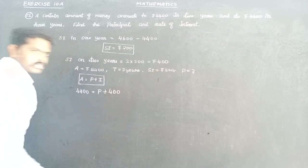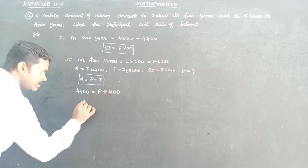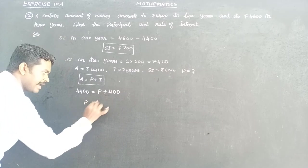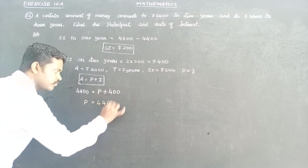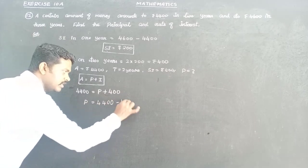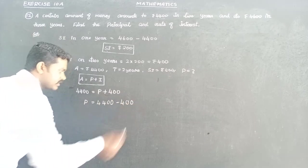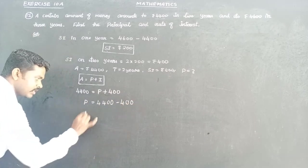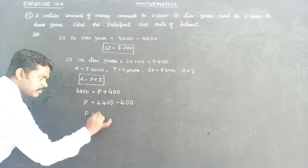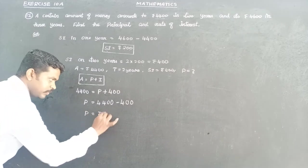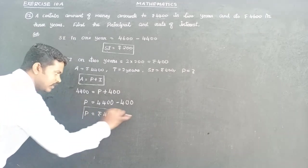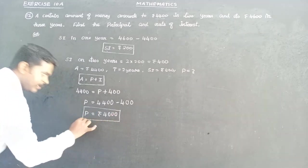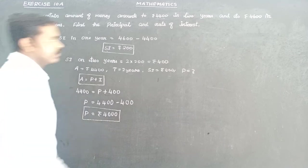Therefore, principal is equal to 4,400 minus 400, which gives principal equal to rupees 4,000. So P is equal to rupees 4,000.